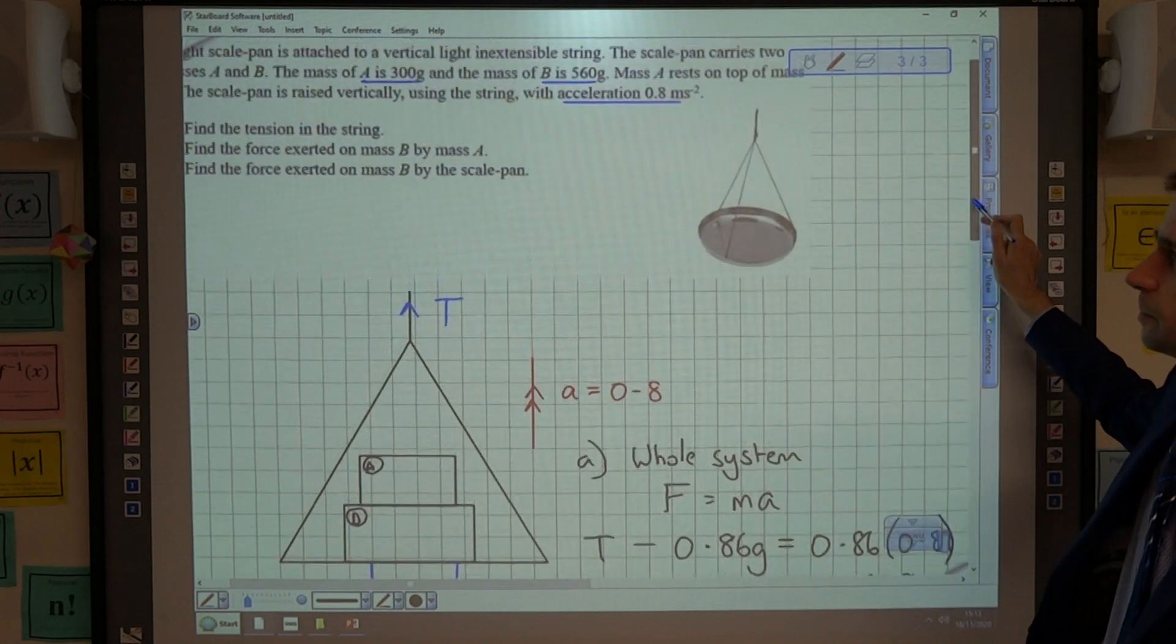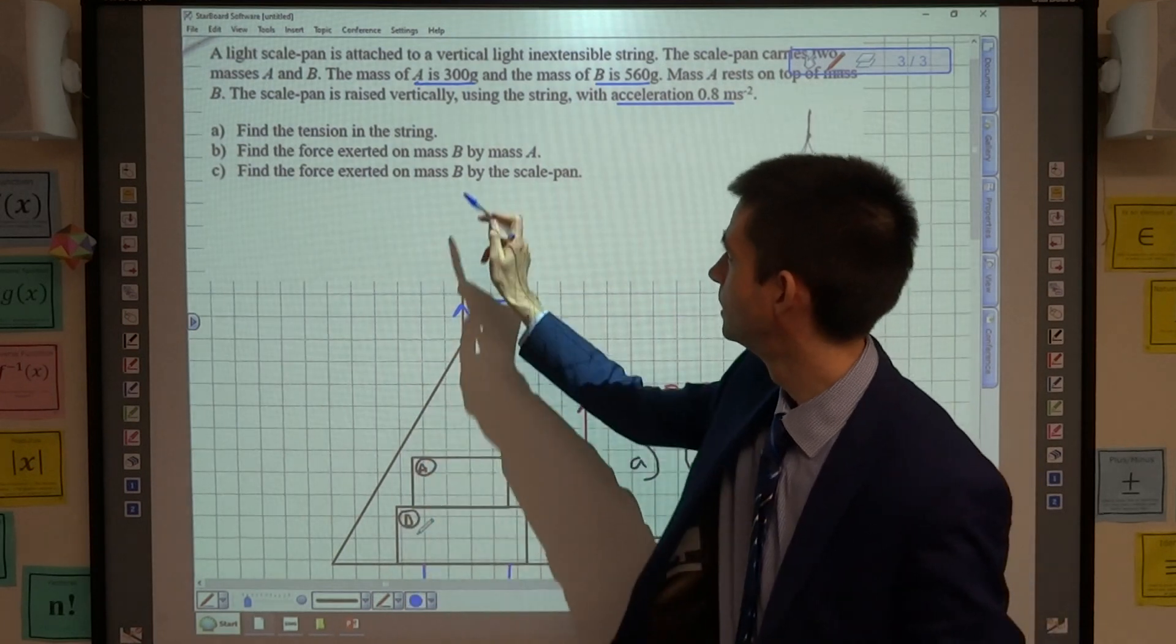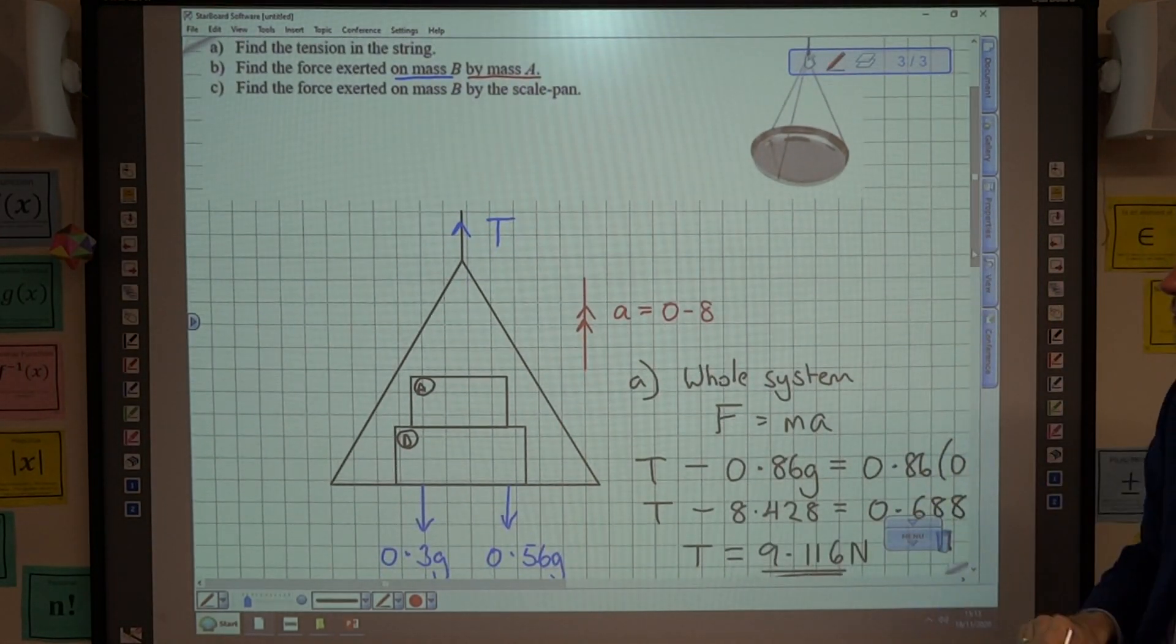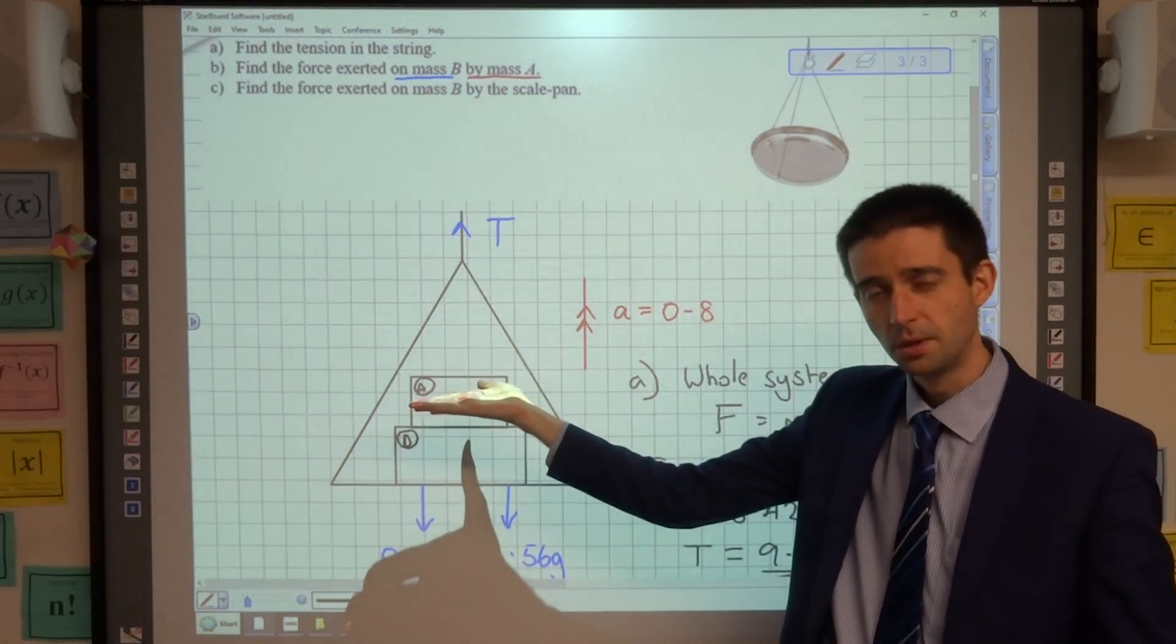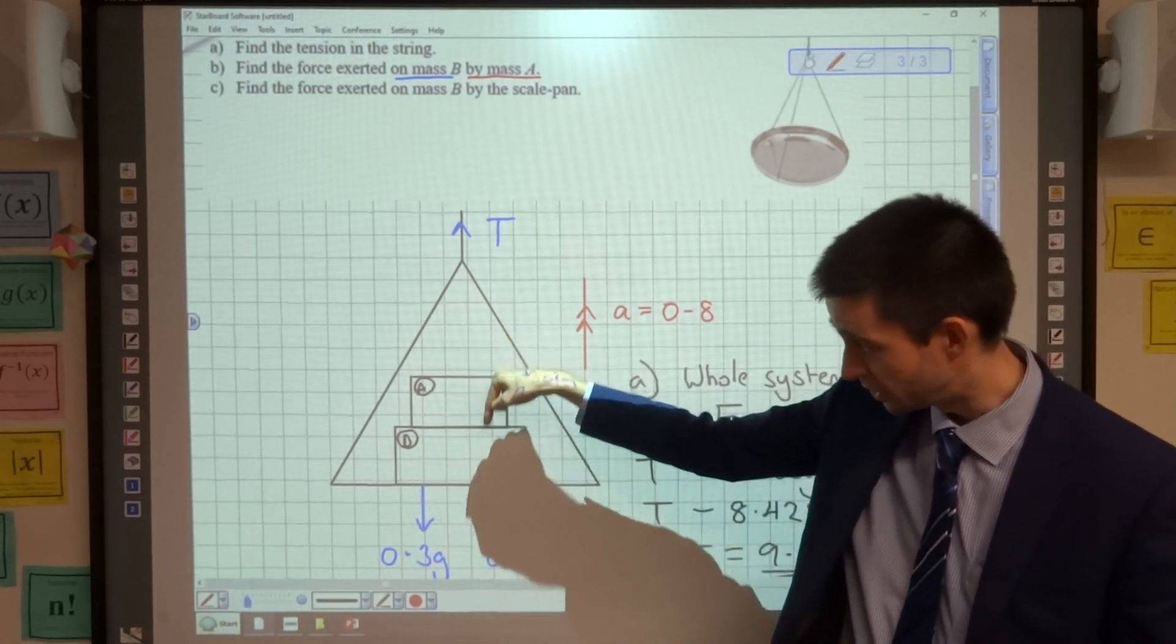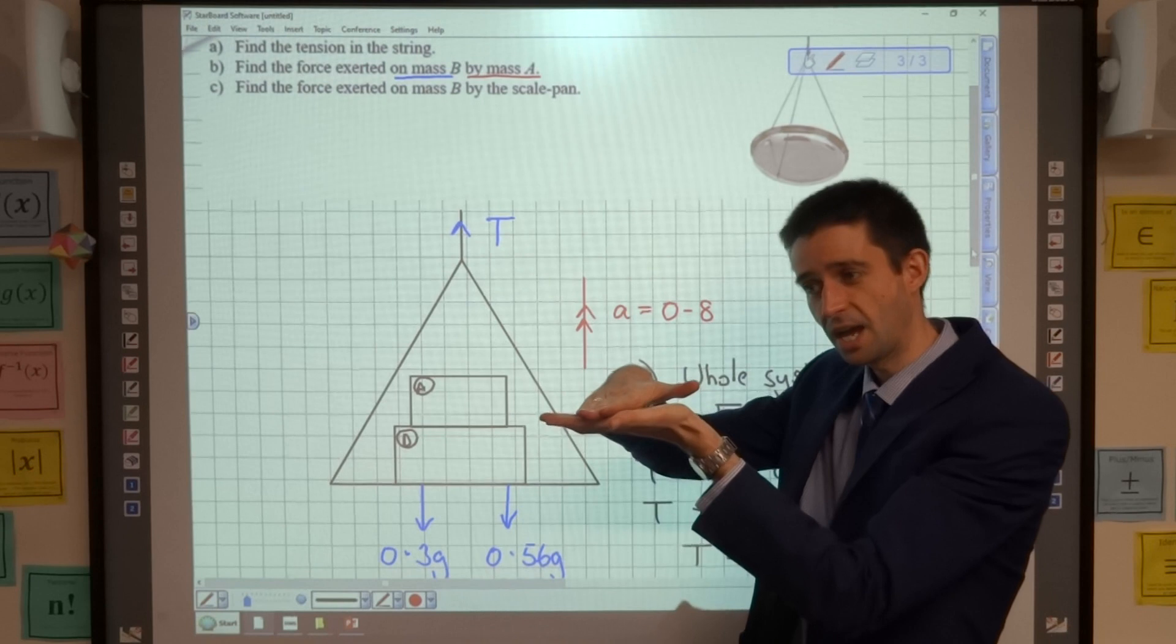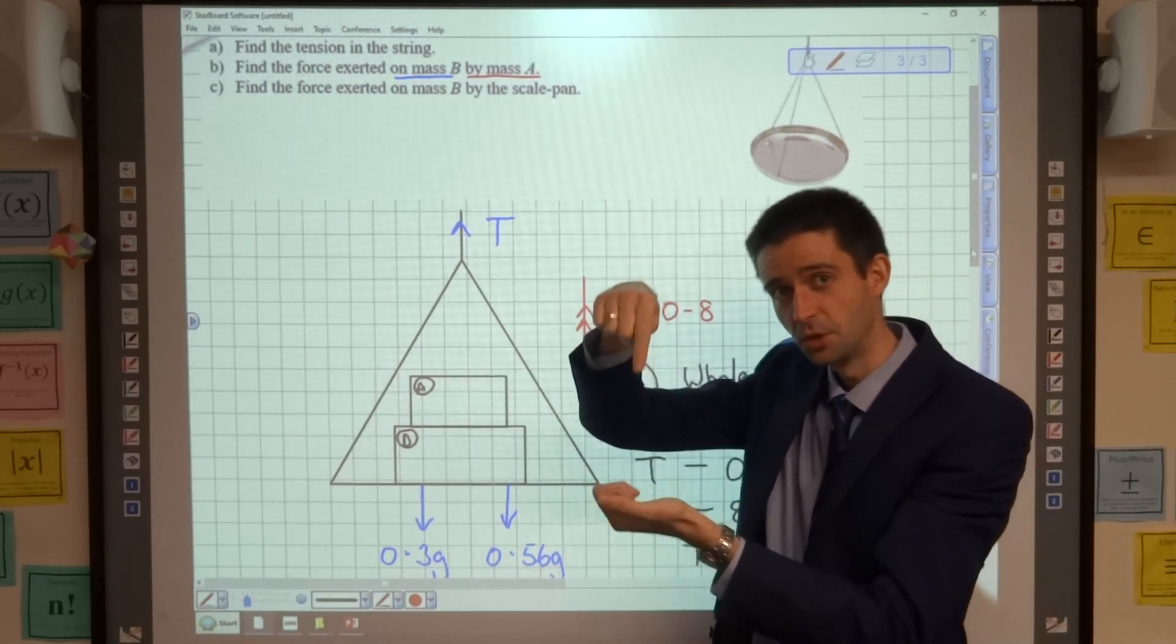Part B then. We are being asked for the force exerted on mass B by mass A. So we just need to consider here what's happening. The forces acting on mass B. Well, mass B is being pushed up by the floor, the base of the scale pan. And it is going to be receiving a force downwards from A, because if you think of mass B as being this here, it's being raised up. Mass A is sitting on top of it. So there's a contact force, mass A exerting downwards on mass B.